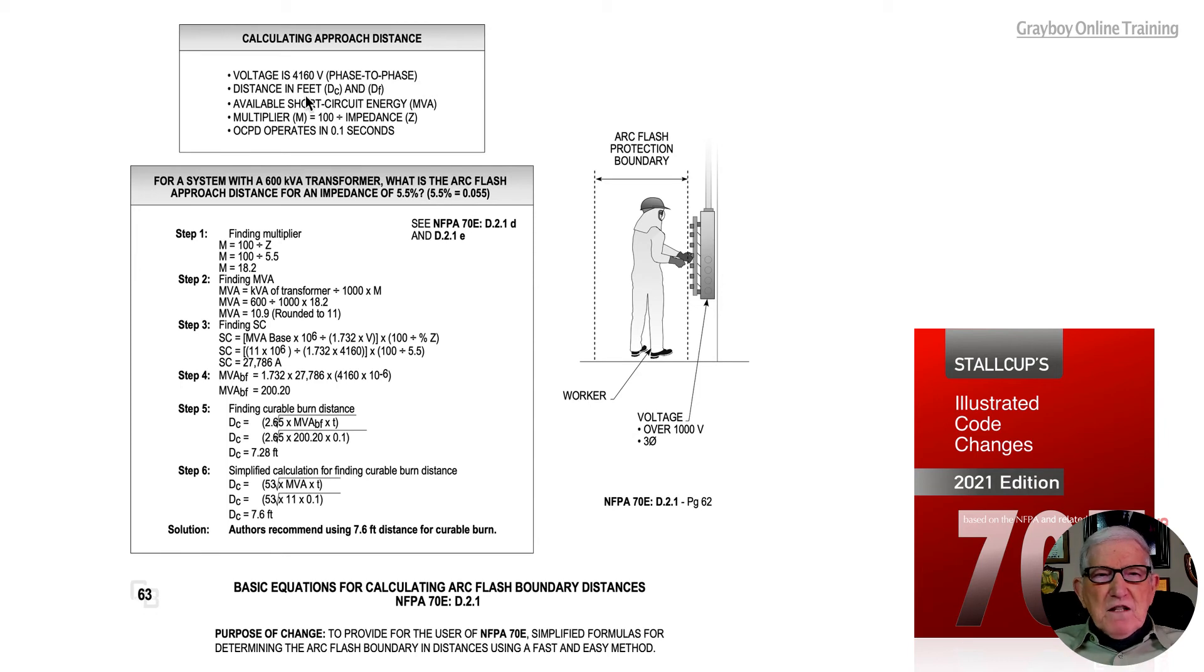We want to look at the available short circuit energy MVA. Develop a multiplier of 100 divided by the impedance of the transformer, and then the overcurrent device operates in 0.1 second, which is approximately six cycles.